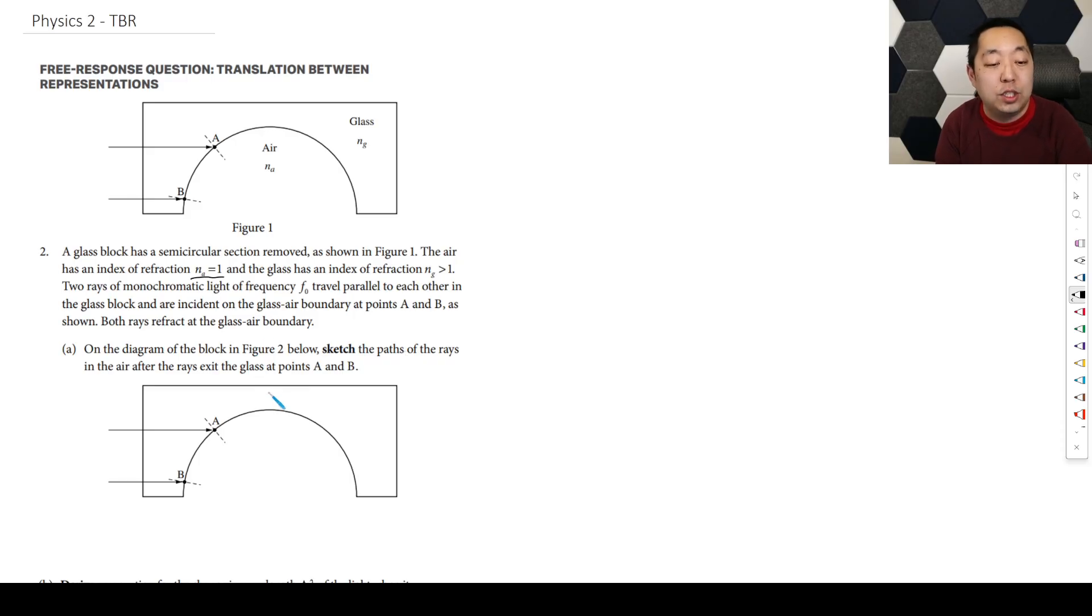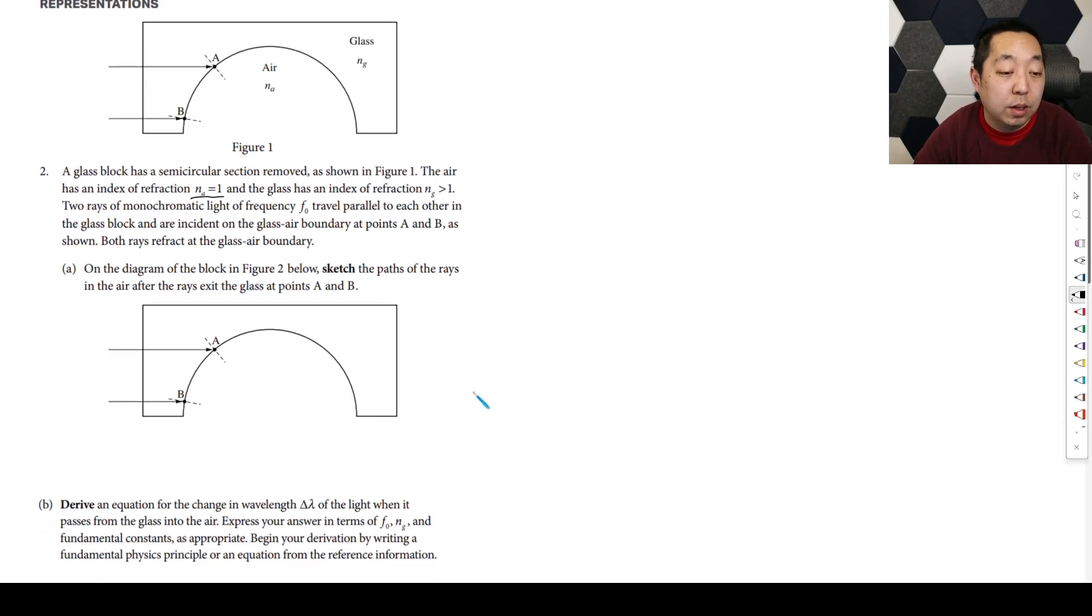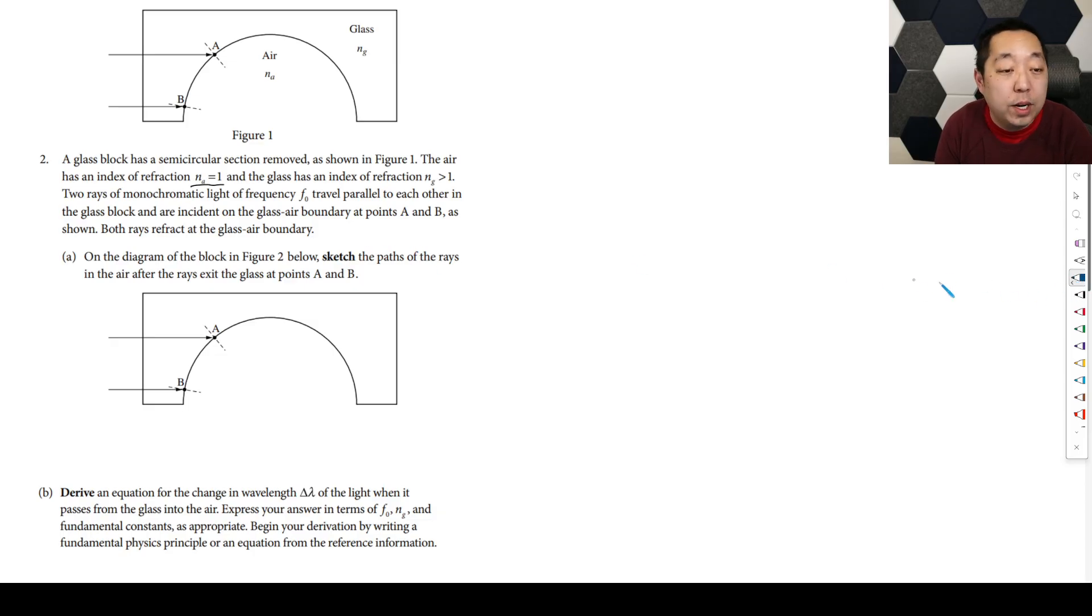And the diagram asks to sketch the pathway. So remember that first part is we're sketching a diagram in the TBR. In this case it's to sketch how it's going to bend. Now remember, when we are going from a denser material to a less dense material, we're going to a smaller index of refraction. We are going to bend away from the normal.